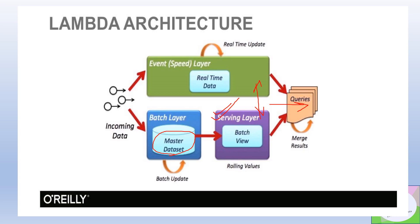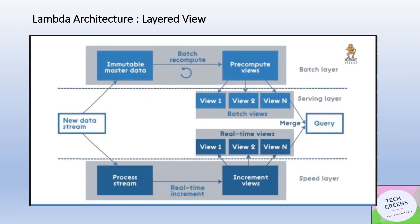At a high level, the lambda architecture talks about two processing paradigms: one is the speed layer where stream processing is happening, and the other is the batch layer where batch processing is happening. The batch layer is the source of truth records. We'll see what the different layers are and what their roles are in the next slide.